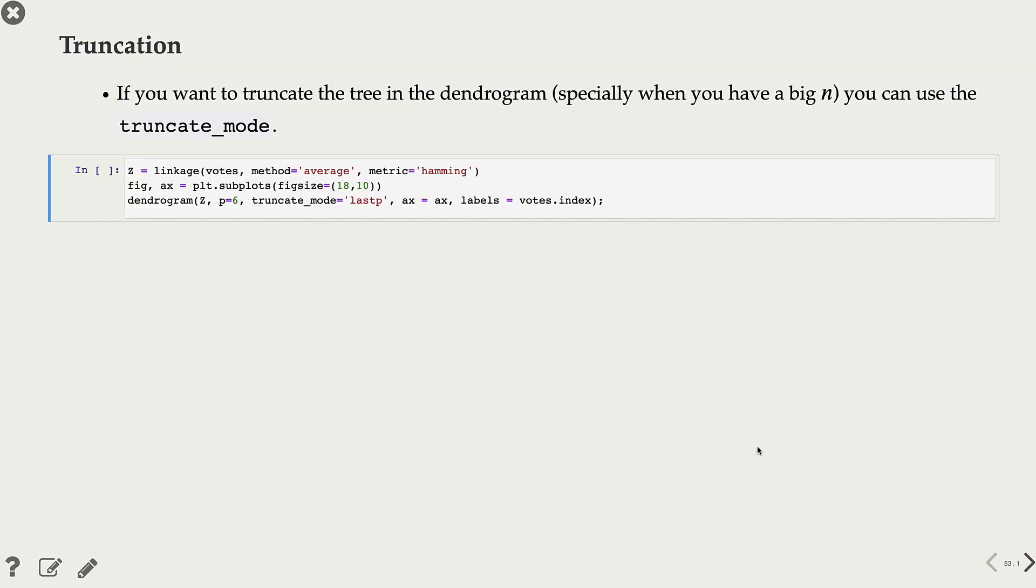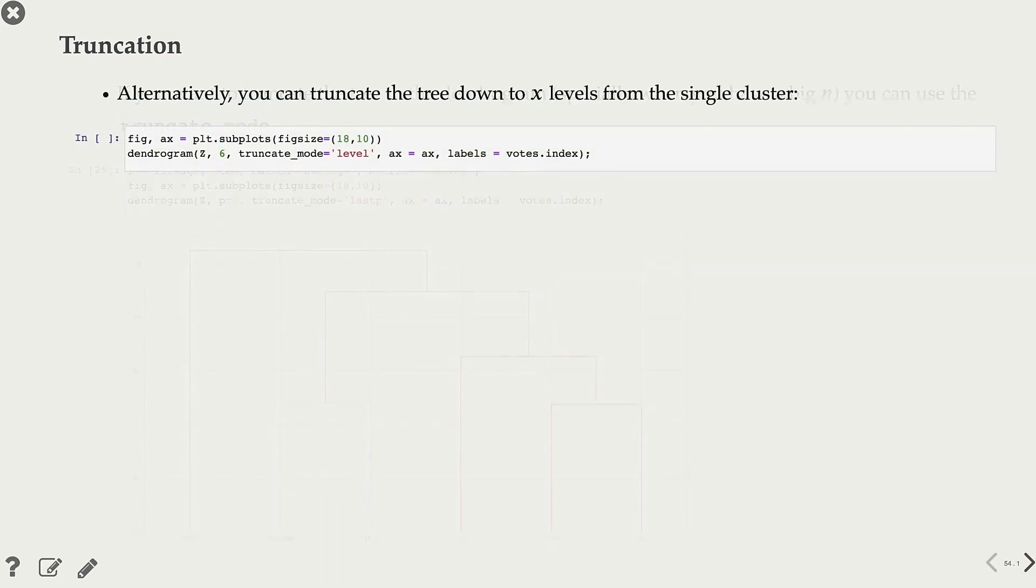When your data set is really large, when you have large number of examples, you can imagine that this dendrogram becomes hard to visualize. So to handle that, there are some truncate modes that you can use. And here I'm showing you a couple of examples of using this truncation.